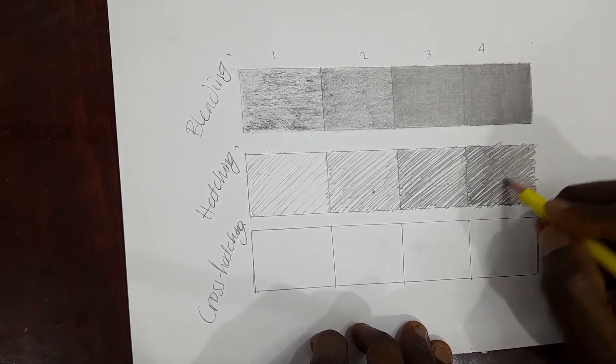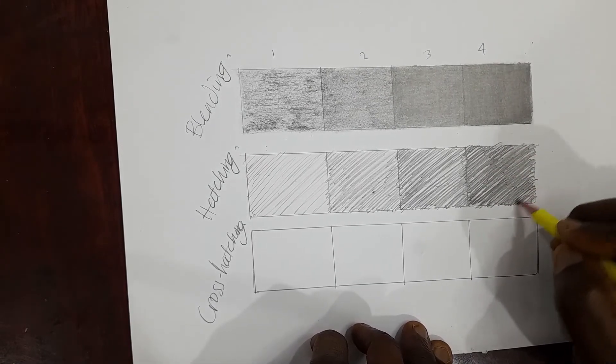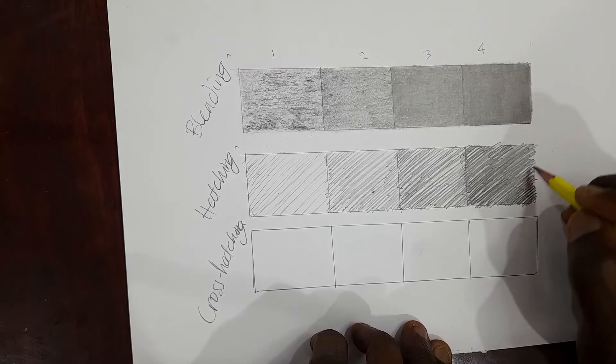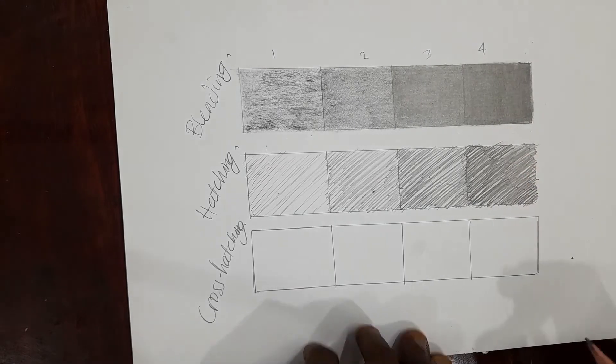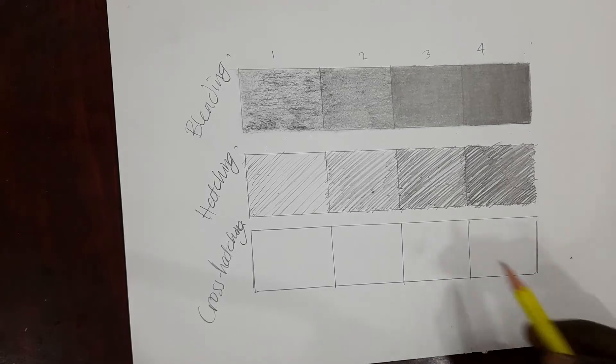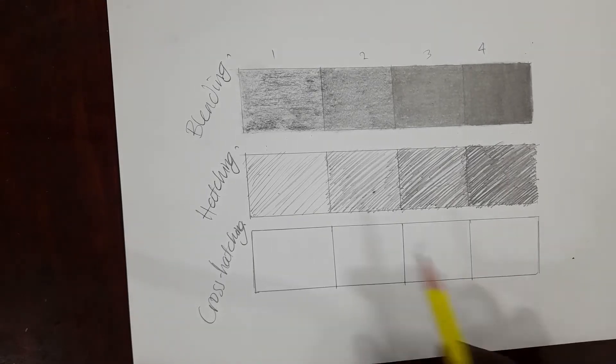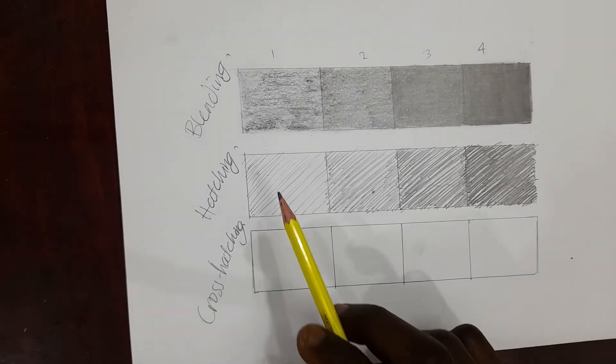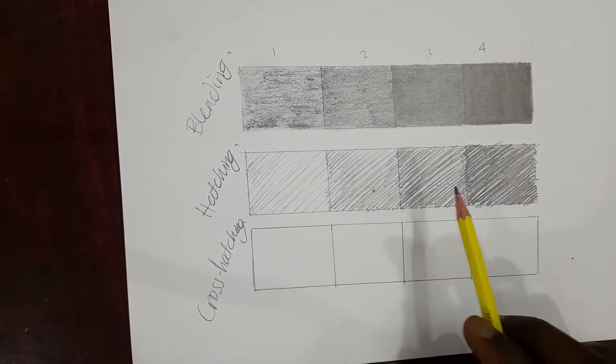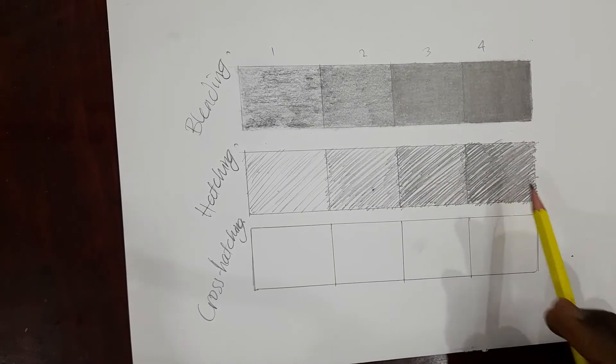And don't forget the hatching technique shows lines in one direction. If you think you're not achieving what you want, there is nothing bad in you rubbing off what you think is wrong and doing the right thing that you want to achieve. So that is hatching for you. The lightest tone, the light tone, the dark tone, the darkest tone.